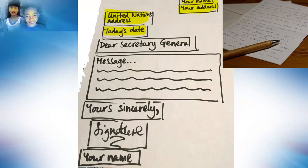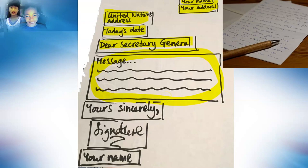The person who is in charge of the United Nations is called the Secretary General. Our greeting — the word 'dear' — would be followed by the title of the person in charge, who is Secretary General. Then we're going to write our message: what are we going to write about to the Secretary General of the United Nations? We're going to write about the problem of lack of clean water. And lastly, you're going to write 'yours sincerely' — this is how you end your letter. You finish your message, write 'yours sincerely,' and then sign your signature and write your name.